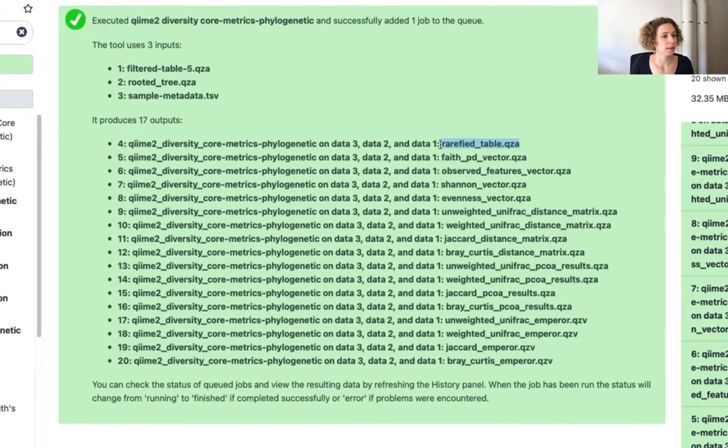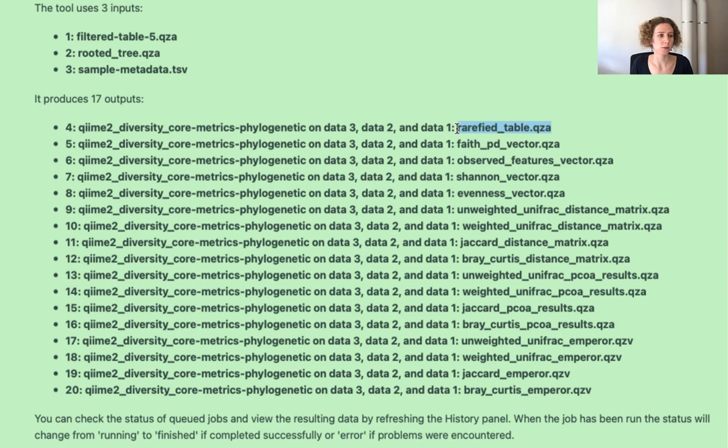this is the rarefied table that I talked to you about just a second ago. This is the rarefied table. Then we have these vectors for alpha diversity. We have these distance matrices for beta diversity. We have the PCoA results. And we have the visualizations.